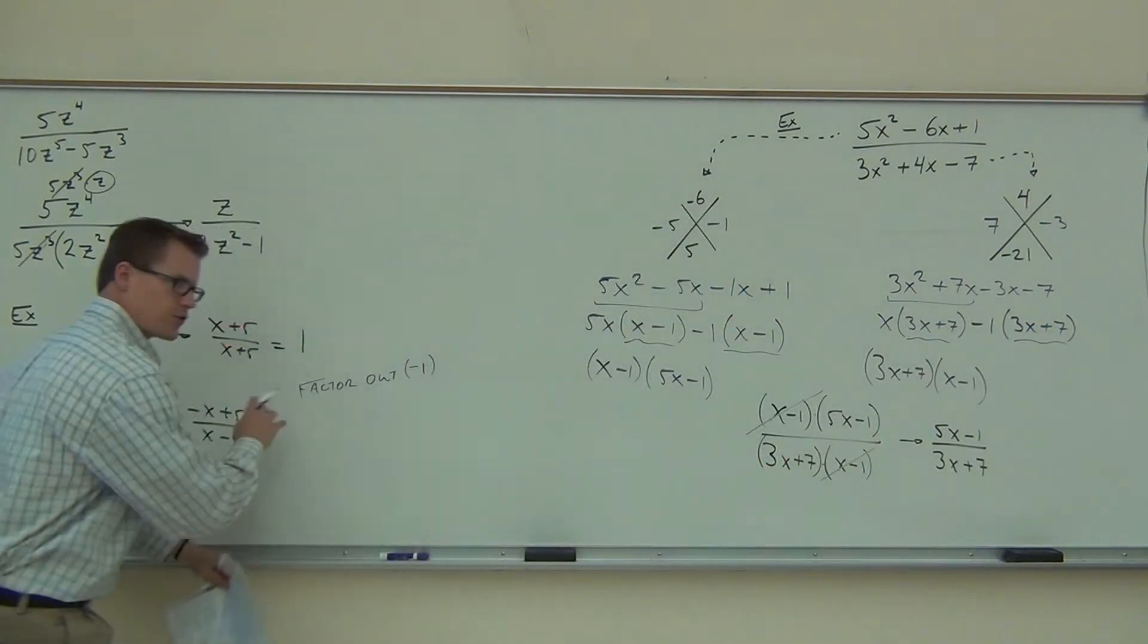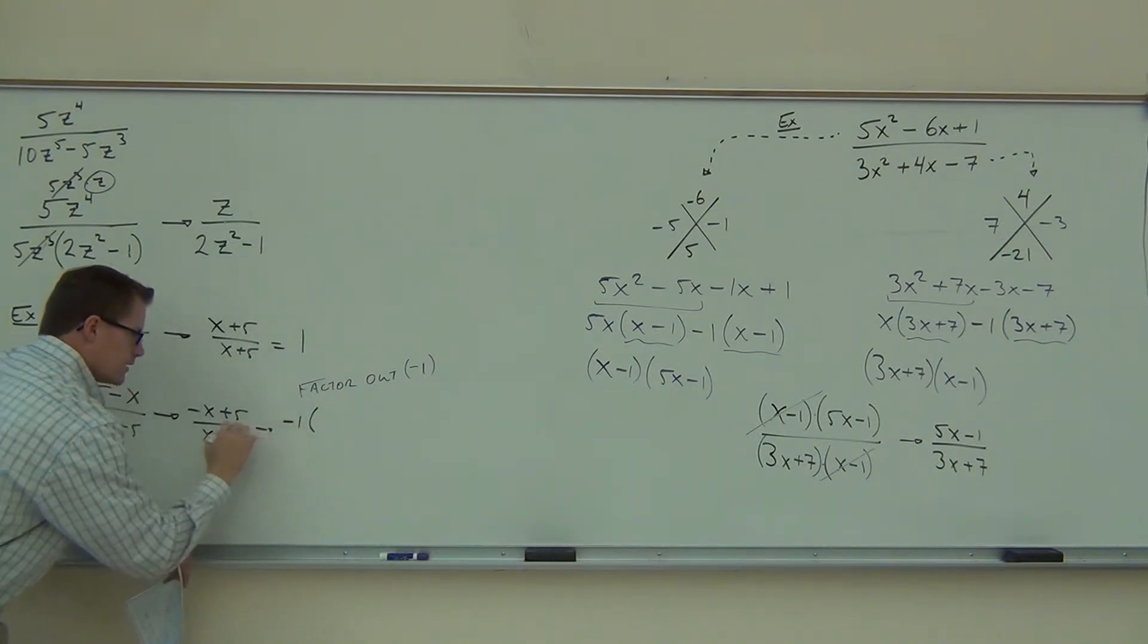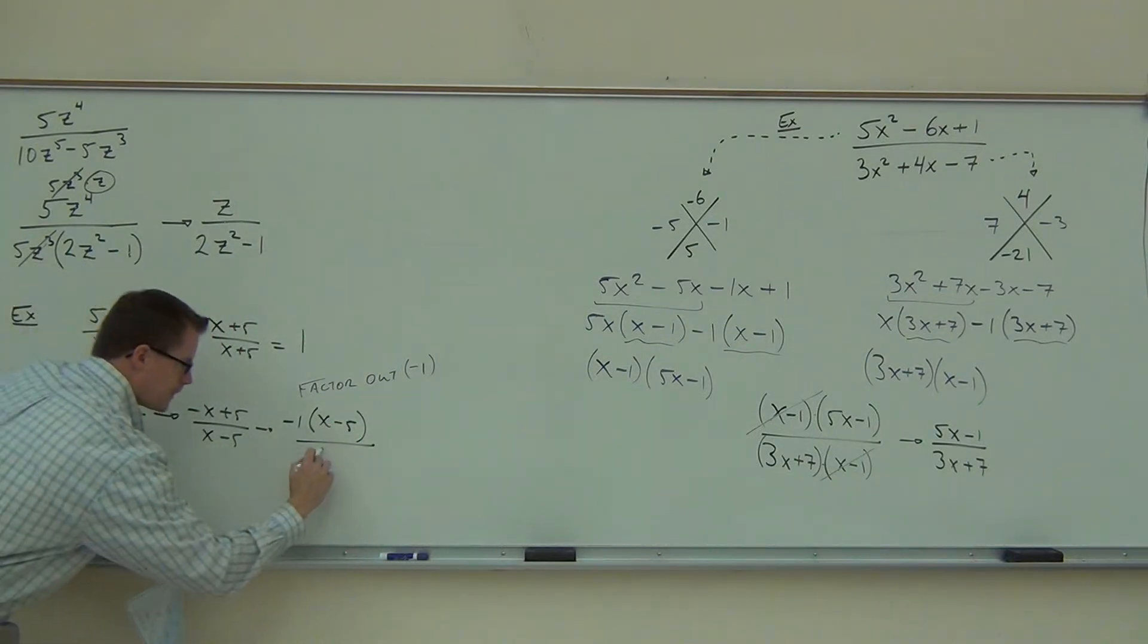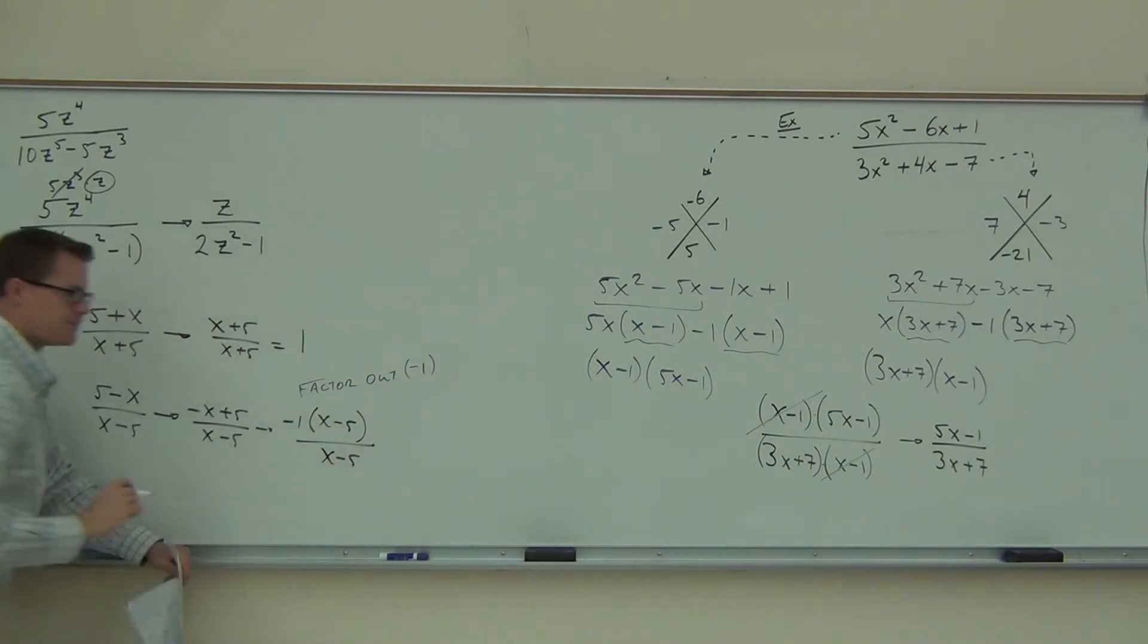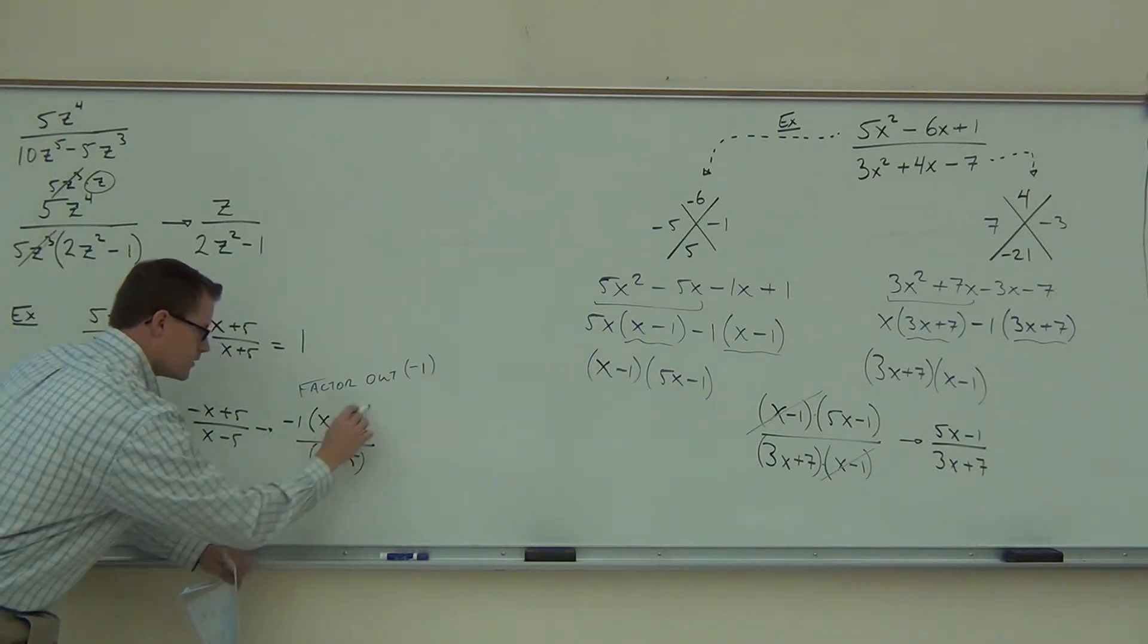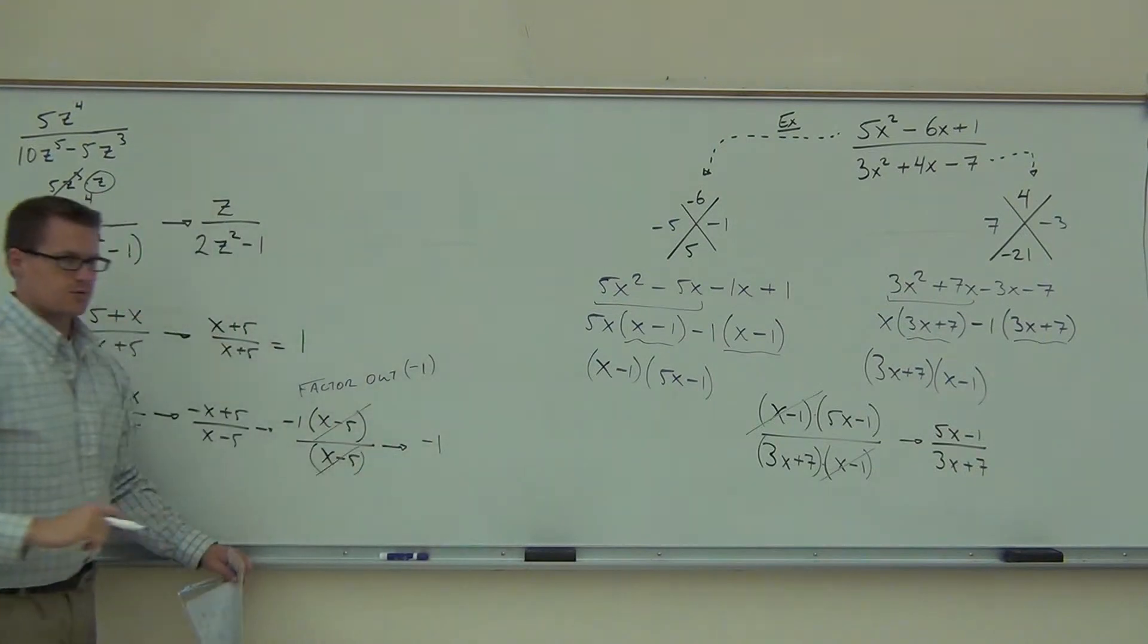So if we factor a negative 1 from here, let's factor a negative 1, and what we're going to get is instead of negative x, we'll get x. Instead of plus 5, we'll get minus 5, all over x minus 5. Now, do you see that the x minus 5 are factors? We can simplify that. And our answer, that's negative 1.